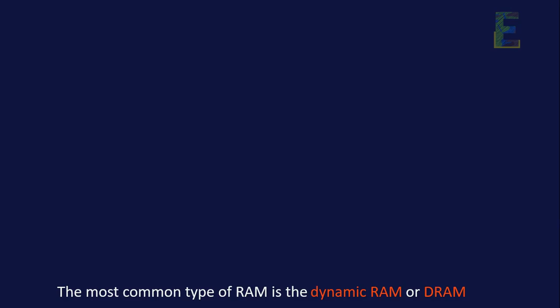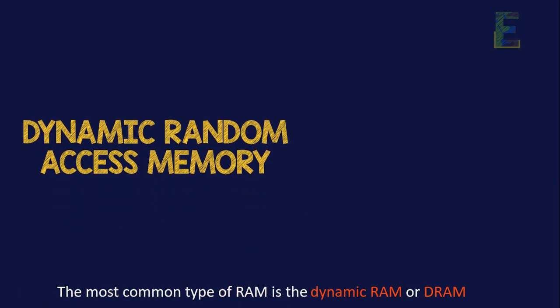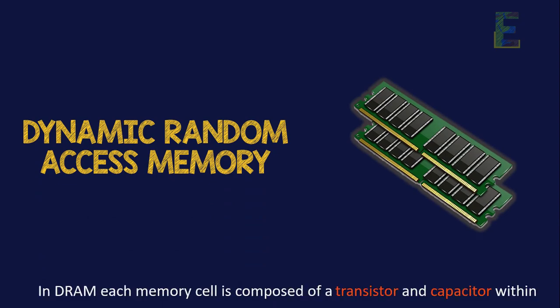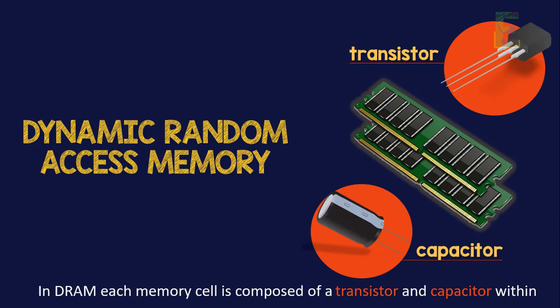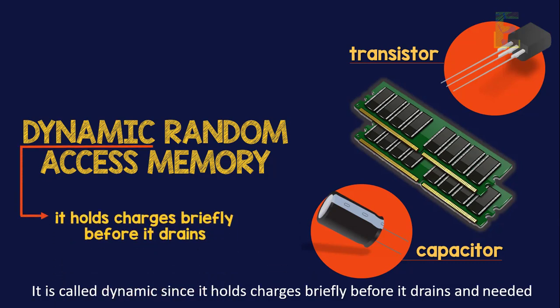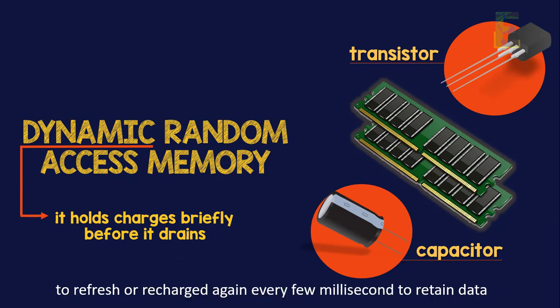The most common type of RAM is the Dynamic RAM or DRAM. In DRAM, each memory cell is composed of a transistor and capacitor within the integrated circuits, or IC, that stores electrical charges. It is called Dynamic since it holds charges briefly before it drains and needs to refresh or recharge again every few milliseconds to retain data.